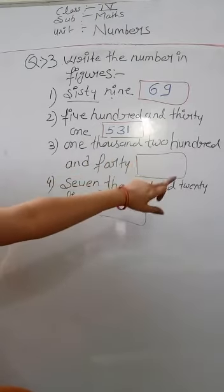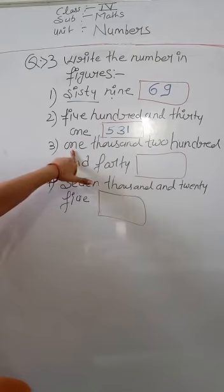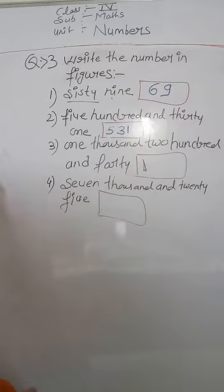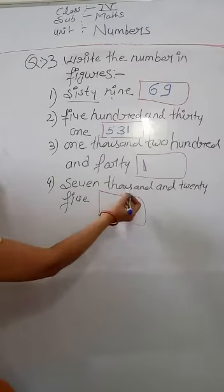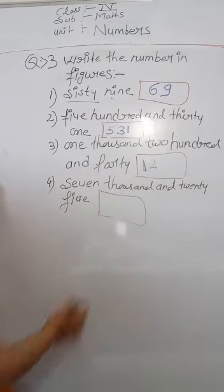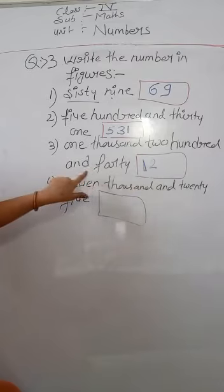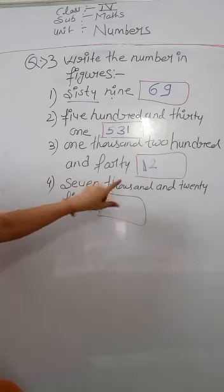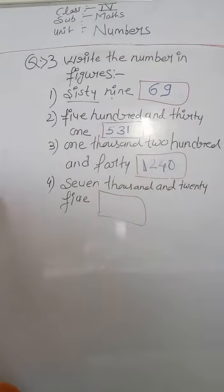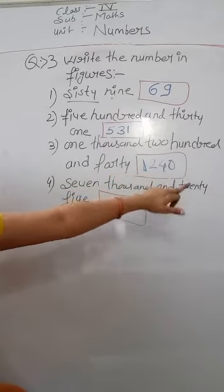Now the next one is one thousand two hundred and forty. 1 is in the thousands place, 2 is in the hundreds place, and 40. So 1240. Clear?